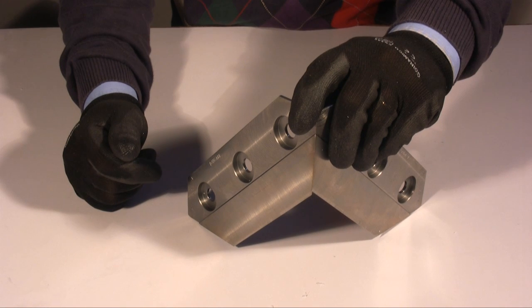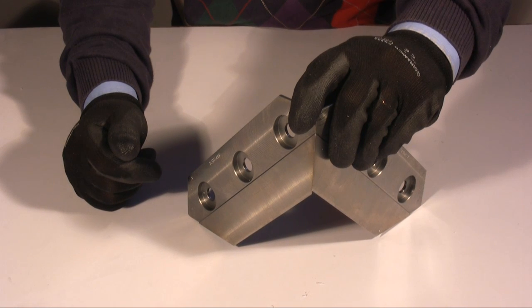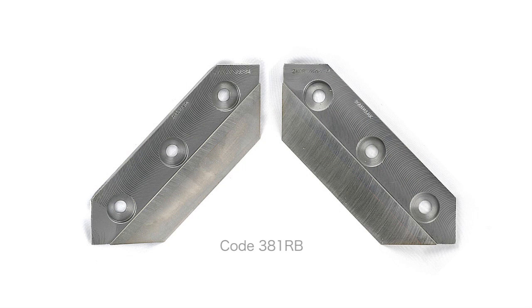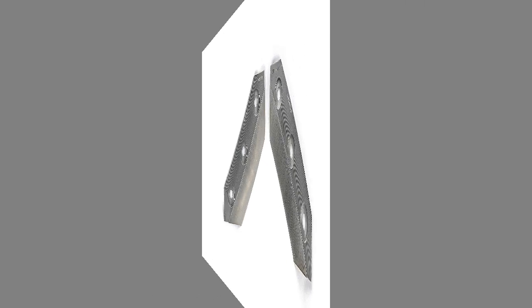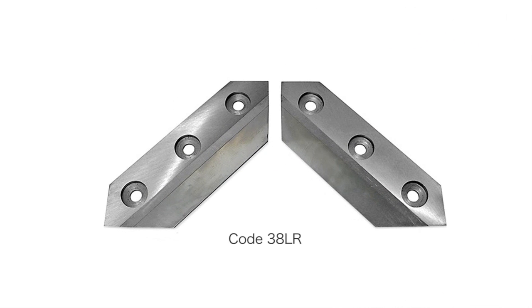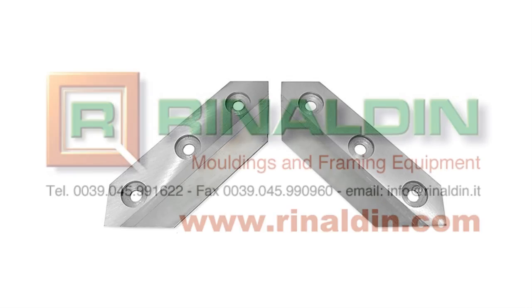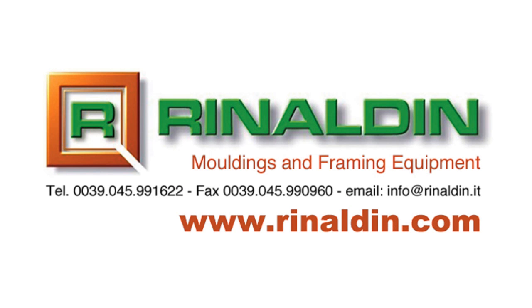The reversible blades provided by Rinaldin are reversible blades by Morso and reversible blades by Pilum. You can find all the blades for the guillotines in the Rinaldin catalogue and on the website www.rinaldin.com.